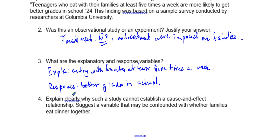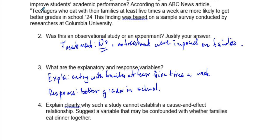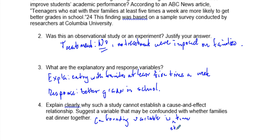Now explain clearly why such a study cannot establish a cause-and-effect relationship, and identify a confounding variable. A possible confounding variable: if teenagers eat with their families five times a week, they probably have more time — they may not have part-time jobs. So one confounding variable is extra time. Students who have extra time to eat with their families probably also have extra time to study.